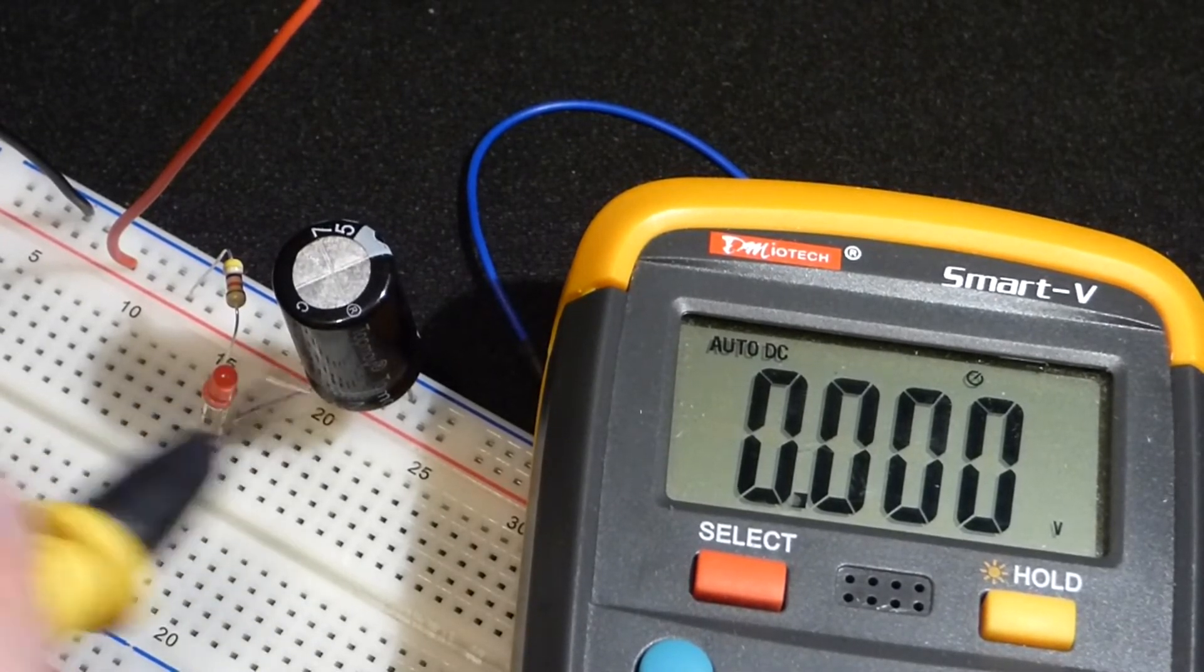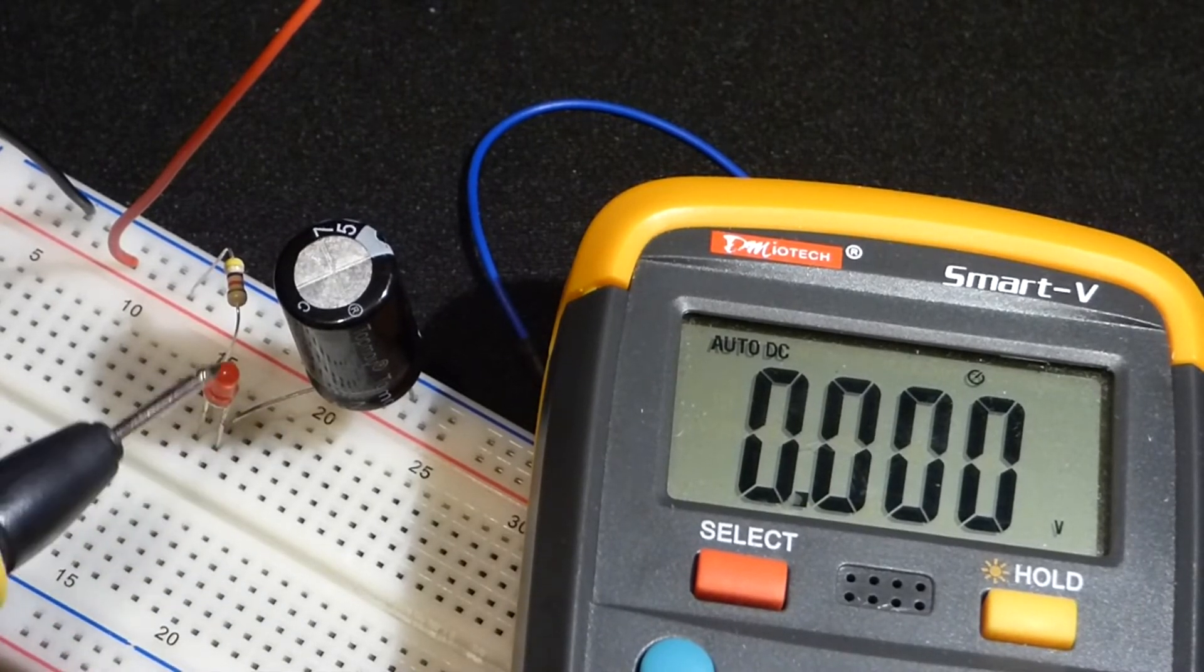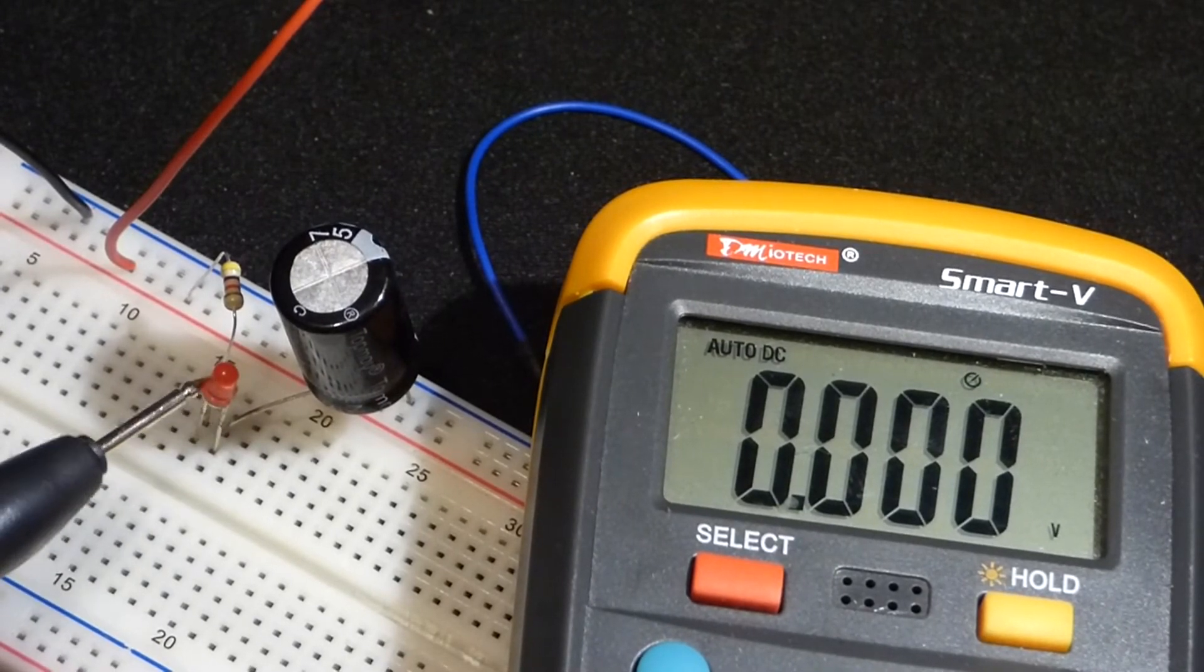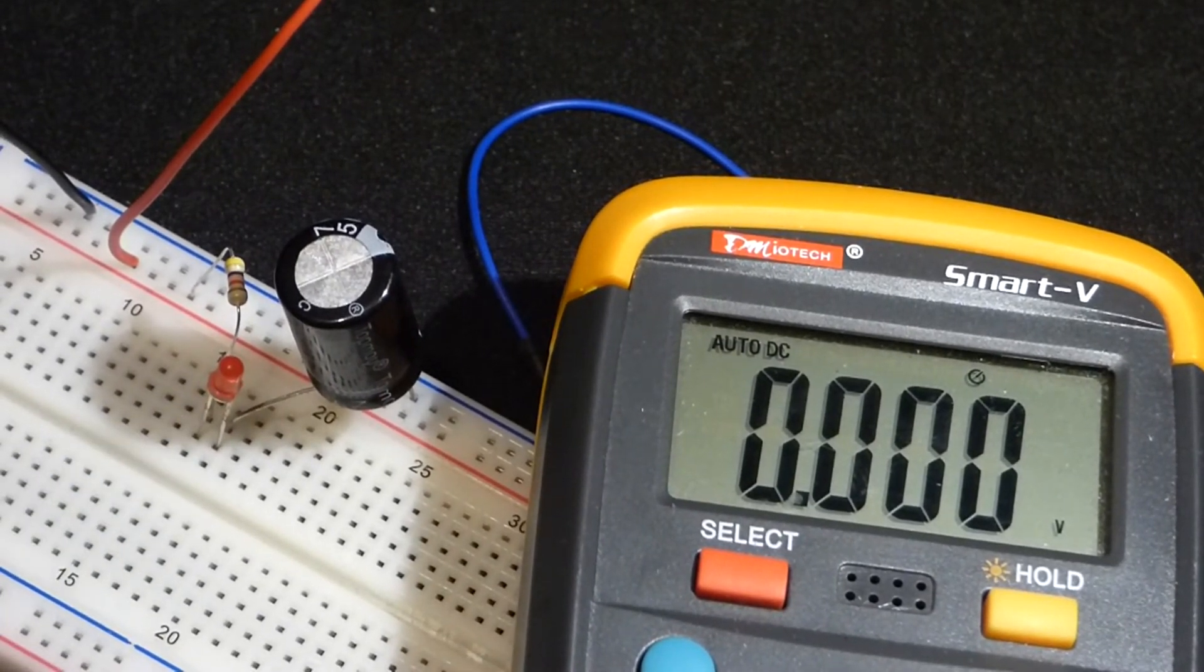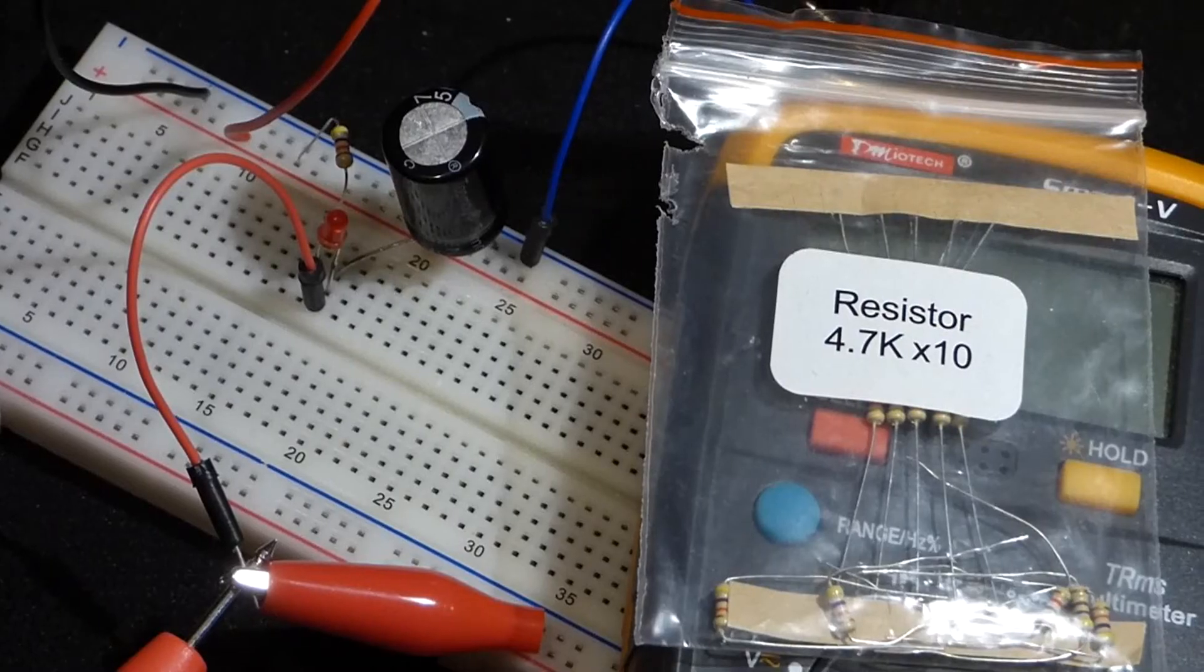But at higher currents, close to 20 milliamps, it seems to block about 2.2 volts. I showed that in some recent videos.